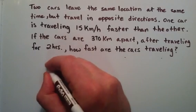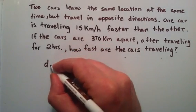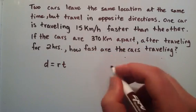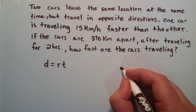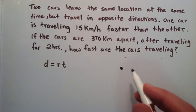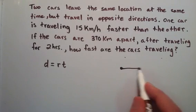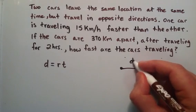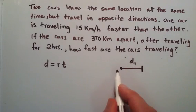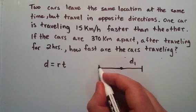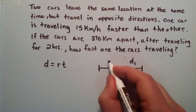In order to solve uniform motion problems we simply need to use distance equals rate times time. We're going to draw a diagram here. This dot will be the starting location of our cars. This is the distance that car one has traveled in two hours, we'll call that d1. And this line is the distance that car two has traveled in two hours, we'll call that d2.